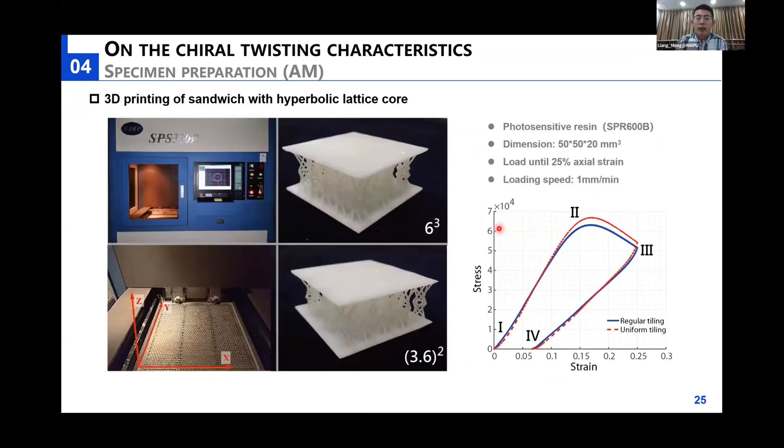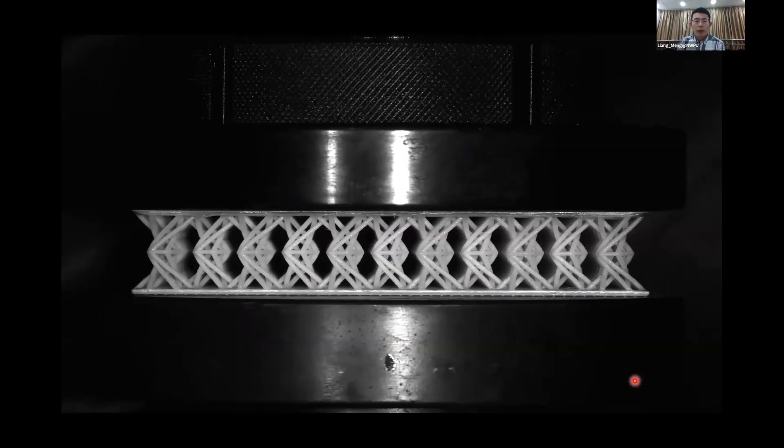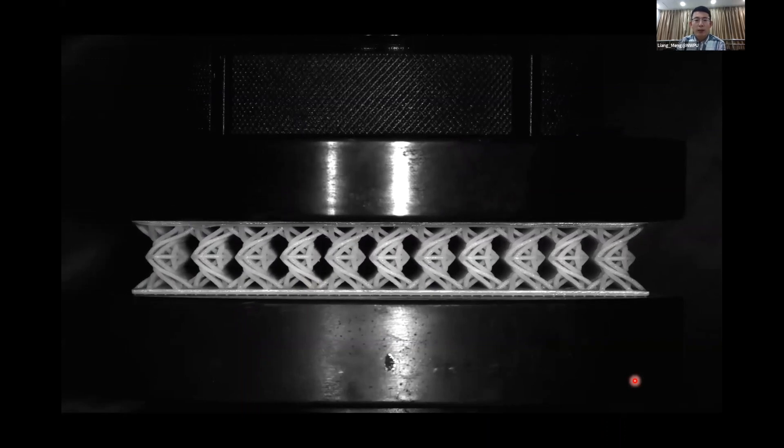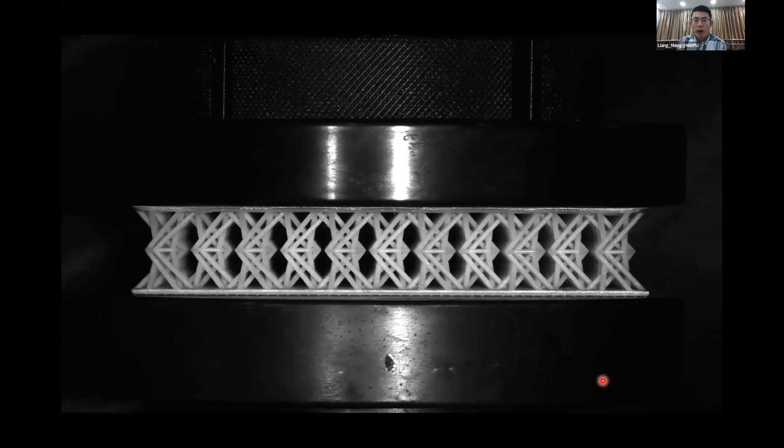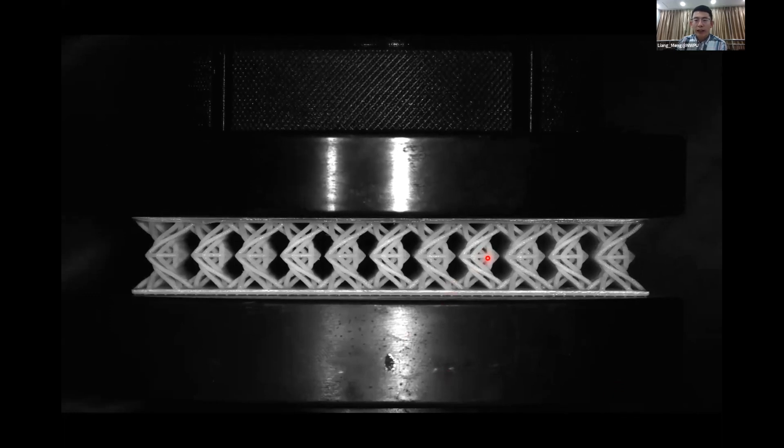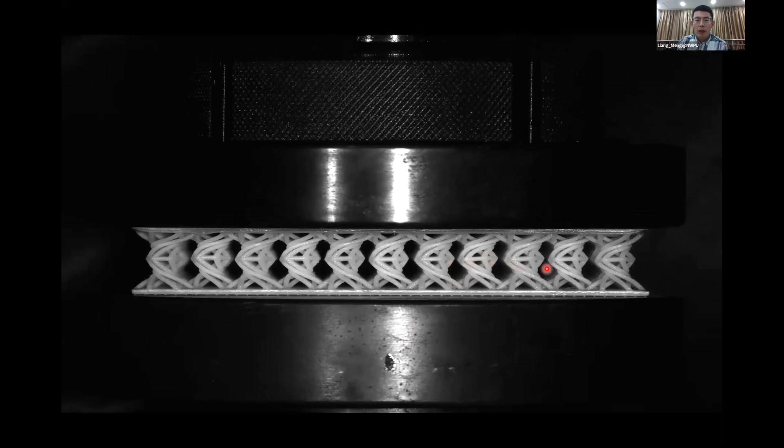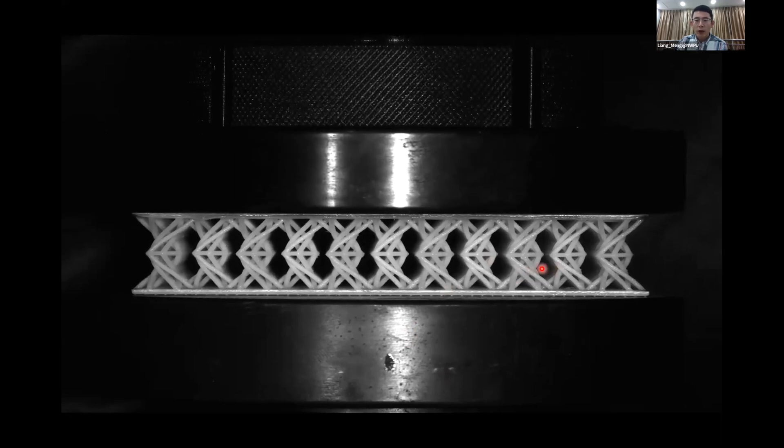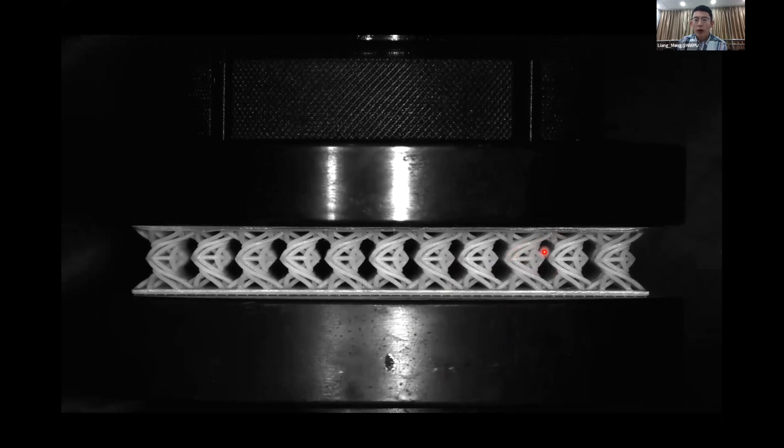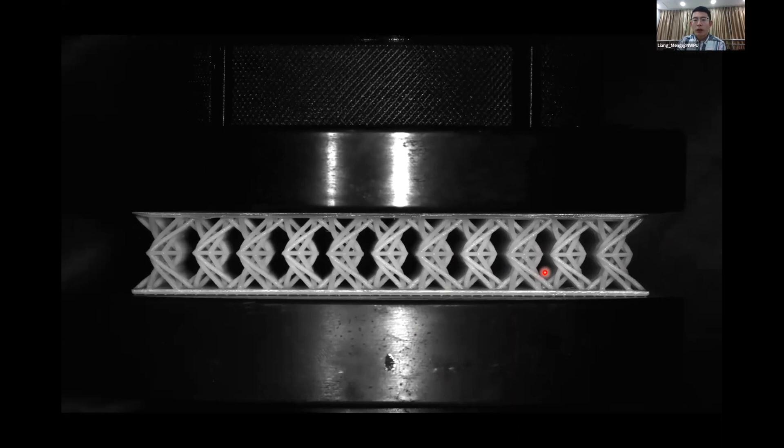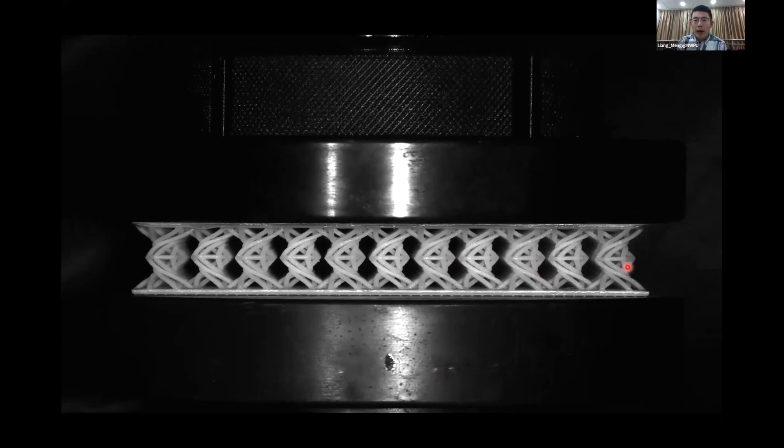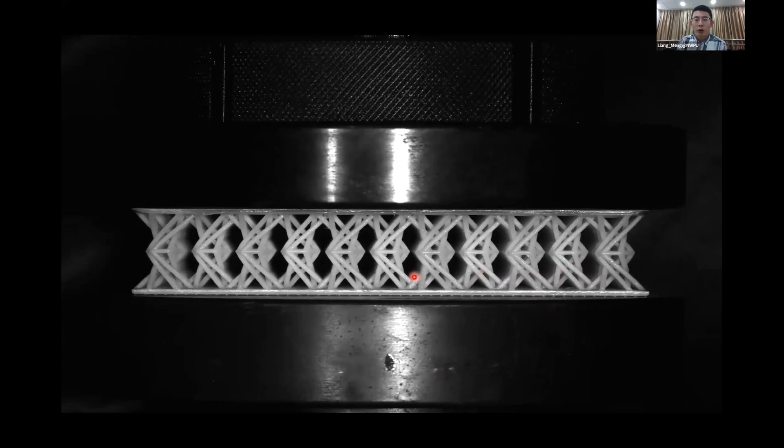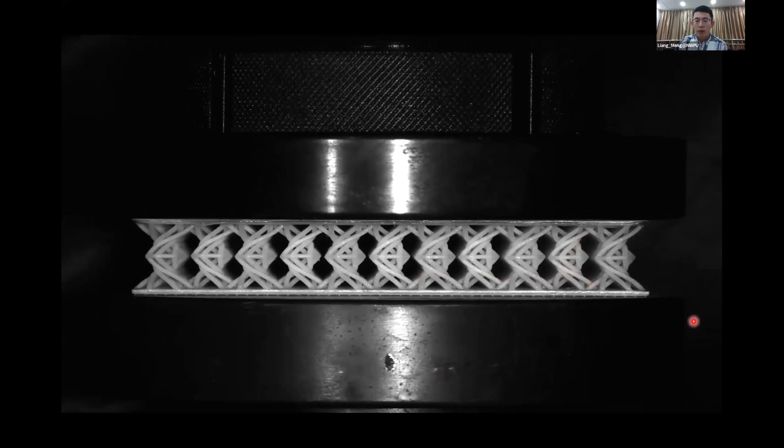Specimens are then fabricated by stereolithography using photosensitive resin. Here is the compressive stress-strain curve in static compression, and here is a video recorded for the lattice placed under compression. Please note that at the first phase, a clear rotation is observed on the mid-layer. Afterward, lateral struts start to buckle and gently get into touch. We underline that a possible increase of energy dissipation may be induced by frictions of these lateral struts after rotation.